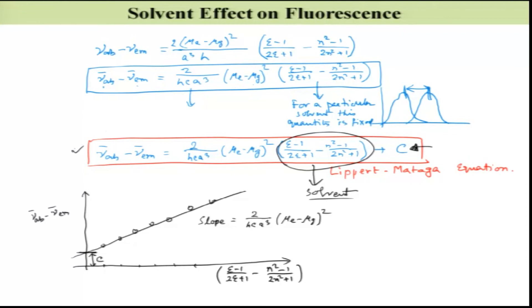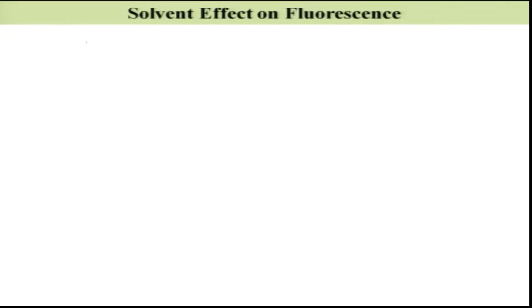The question is how to measure the ground state dipole moment — there are several techniques. But let me tweak this equation differently to show another interesting outcome. Instead of taking ν̄_absorption minus ν̄_emission, I can also compute ν̄_absorption plus ν̄_emission, because I know the expressions for both hν_absorption and hν_emission, so I can add them.